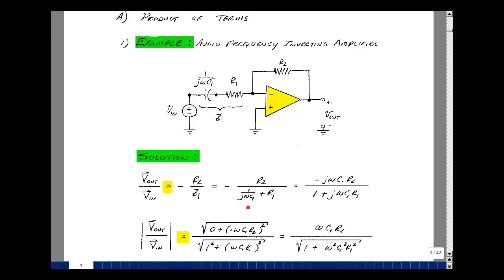Now multiply the numerator and denominator by j omega C1, and you get a 1 here, and then j omega C1 times R1, and then the numerator will get a minus j omega C1 times R2.